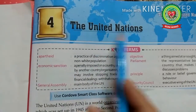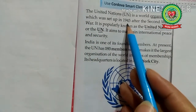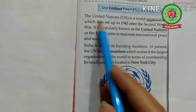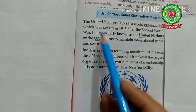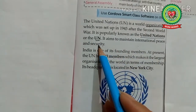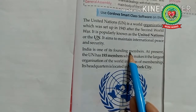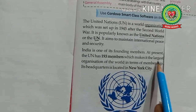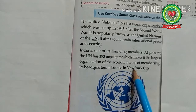The United Nations is a world organization set up in 1945 after the Second World War to maintain peace and security in the world. It is popularly known as the UN. It aims to maintain international peace and security. India is one of its founding members — 'founding' means the original members. There were 51 original members of the United Nations, and at present the UN has 193 members, making it the largest organization in the world in terms of membership. Its headquarters is in New York City, United States of America.